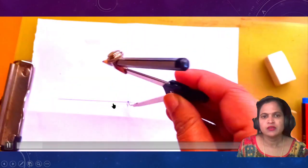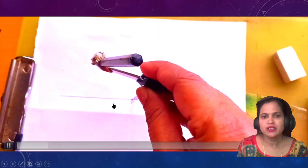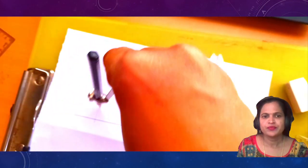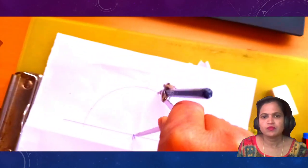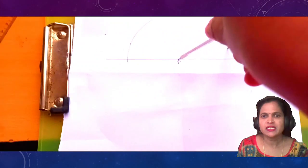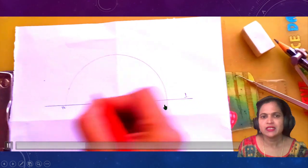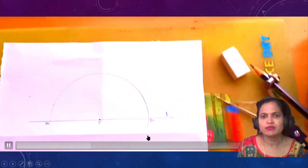Now, with the help of the compass, keeping on point P, I draw an arc which is intersecting the line L like this, intersecting at point A and point B.